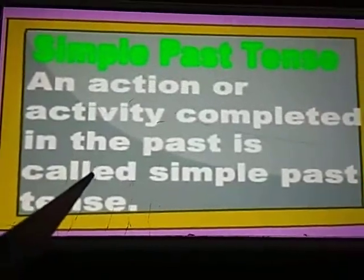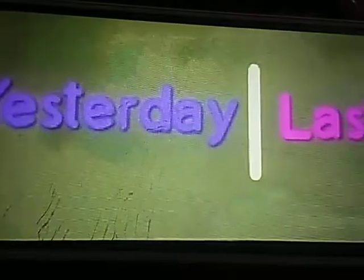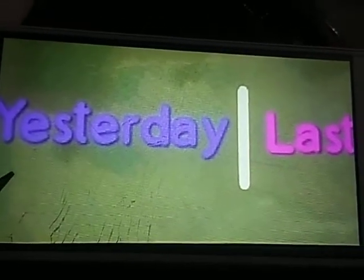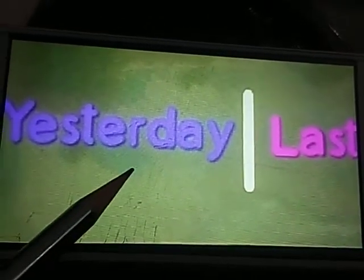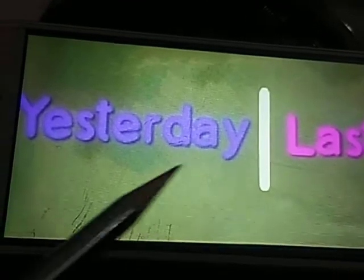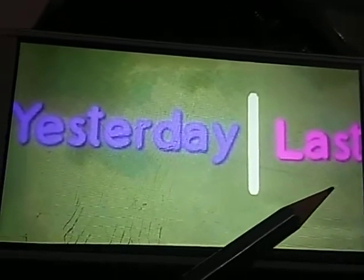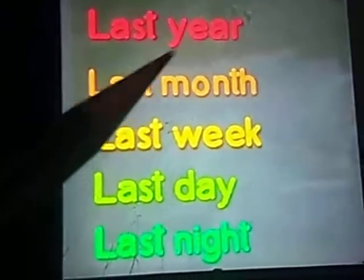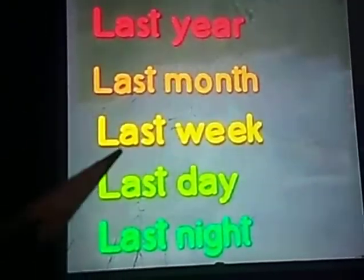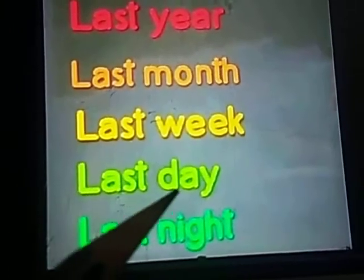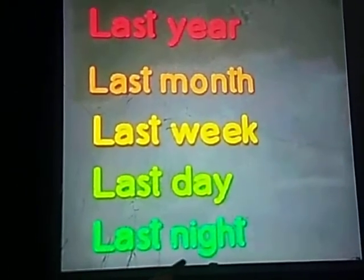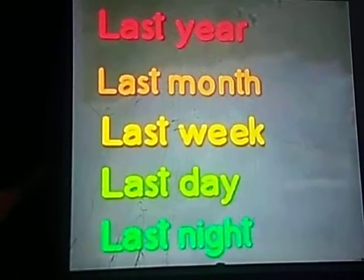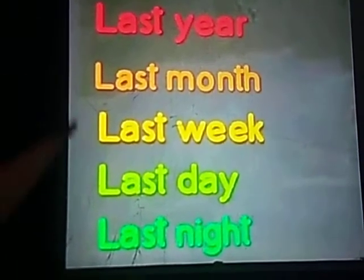And children, do you remember the friends of past tense? Already told you in the previous video — past tense has two friends: yesterday and last. Yesterday and last. We use 'last' with: last year, last month, last week, last day, last night. These all are the friends of past tense — yesterday and last.